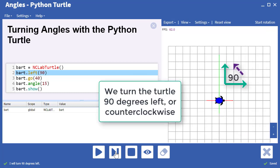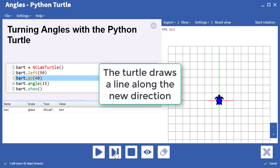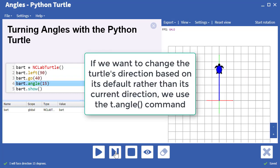Now we're going to turn the turtle left 90 degrees or counter-clockwise. You can see it's turned left. The turtle's now drawing a line along a new direction.